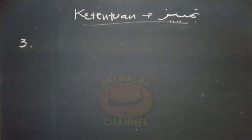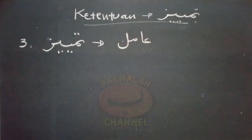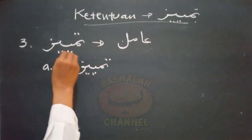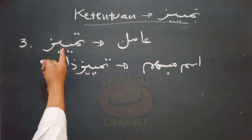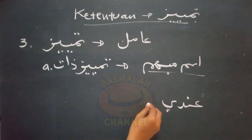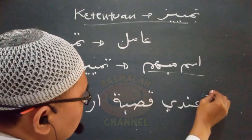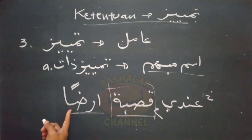Ketentuan yang ketiga, Tamyis tidak boleh mendahului amilnya. Dengan ketentuan manakala hal ini terjadi pada Tamyis Zad, di mana amil dalam Tamyis Zad ini berupa isim mubaham. Contohnya seperti lafad 'Aindi kosbatun arbon' — di sisiku sejengkal tanah. Lafad 'arbon' adalah Tamyisnya, sementara amilnya adalah isim mubaham, yaitu lafad 'kosbah'. Di sini Tamyis tidak boleh mendahului amilnya.